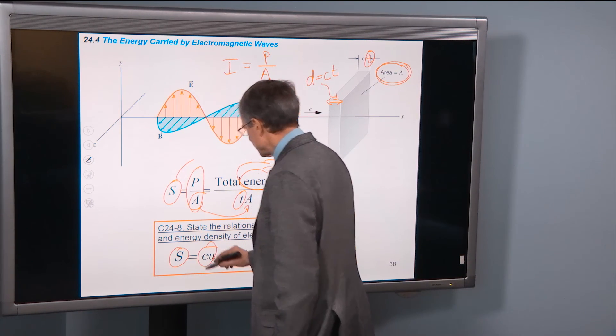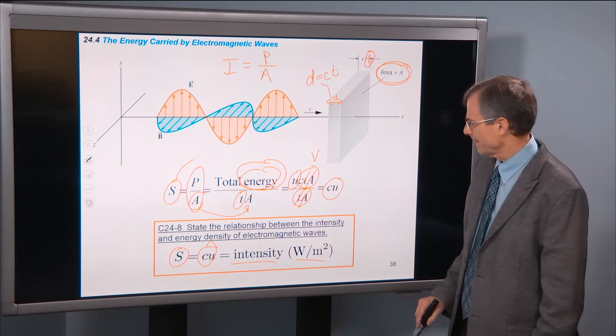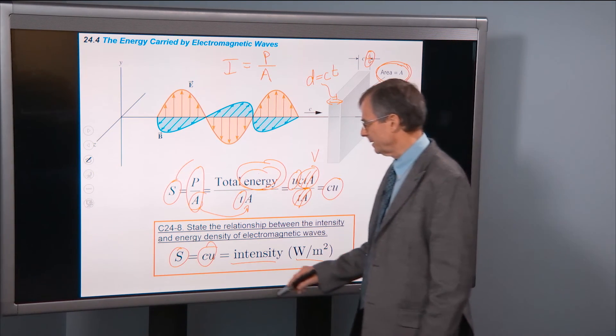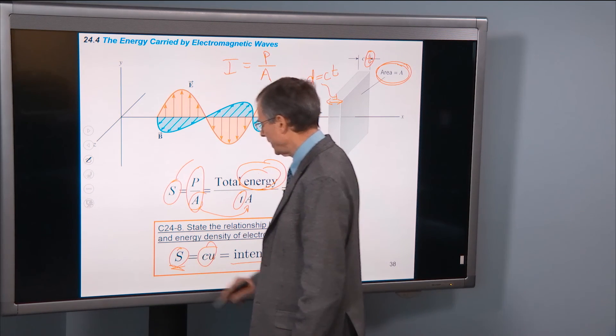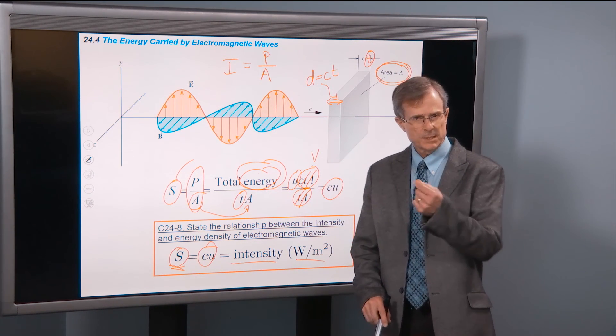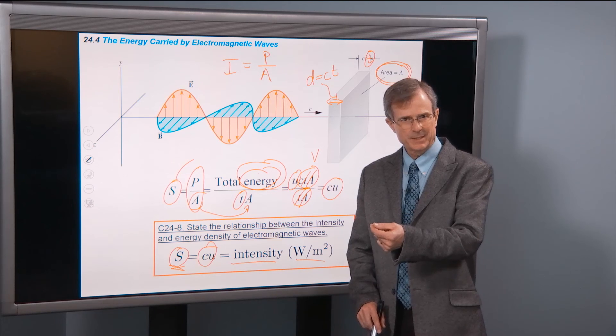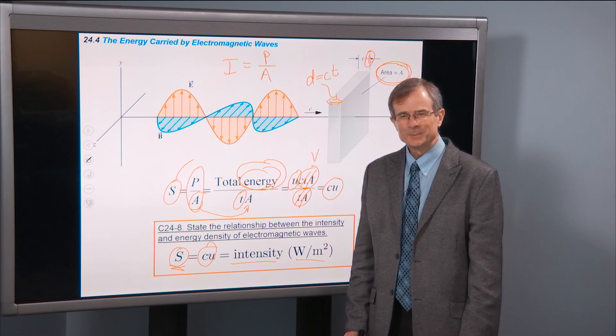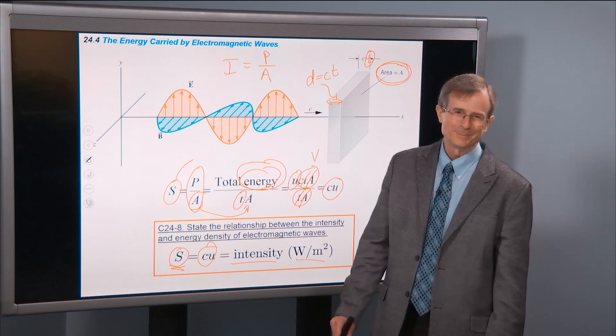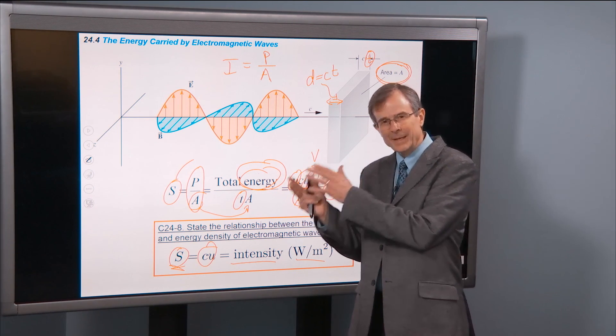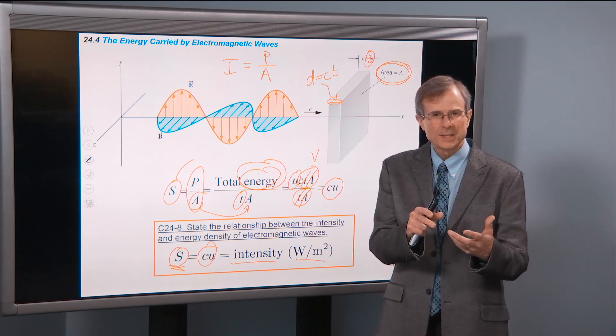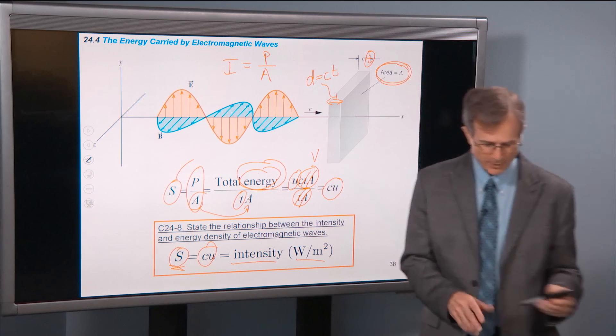And we've just shown that the intensity of this electromagnetic radiation, s, is the speed of light times the energy density, u. So that's pretty cool that you can relate the energy density to the intensity of the electromagnetic radiation.